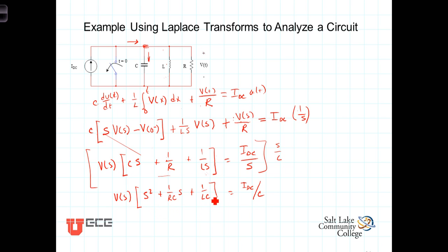You'll notice that this term right here is just the term from the characteristic equation back when we were talking about the more traditional form of solving the differential equation. Let's go ahead and now solve for V of S by dividing both sides by this term, and it gives us IDC divided by C over S squared plus 1 over RCS plus 1 over LC. That's what we're looking for. This is the voltage across this node or this node voltage in the Laplace domain, or this is the Laplace transform of this V of T.